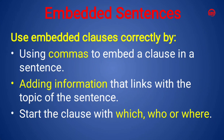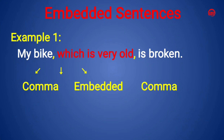Use embedded clauses correctly by using commas to embed a clause in a sentence, adding information that links with the topic of the sentence. Start the clause with 'which', 'who', or 'where' — 'which' indicates things, 'who' indicates a person, and 'where' indicates a place.